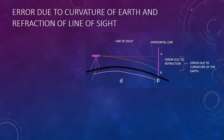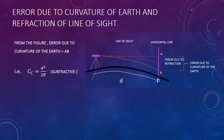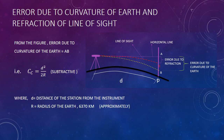The error due to curvature of the earth is represented by portion AB. From the figure, the error due to curvature of the earth equals AB, given by the formula Cc = d²/(2R), which is always subtractive in leveling. Here, d is the distance of the station from the instrument, and R is the radius of the earth, approximately 6370 kilometers.